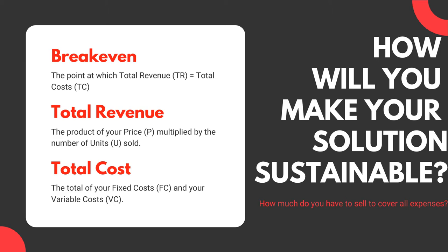Your breakeven point is where total revenue equals total costs. Write it down: TR equals TC. That's your breakeven. Total revenue is the product of your price multiplied by the number of units sold. Total revenue is your price times the number of units you sell. Your total cost is the total fixed costs plus your total variable costs.